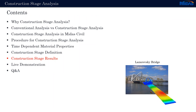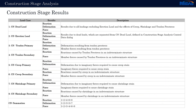Now let's look a bit into construction stage results. Construction stage results are separated in order to be easier to read, and we can read results for dead loads, erection loads, and also results coming from pre-stress, creep, and shrinkage — both in their primary and secondary effects. All of these can be read together under summation in order to have the result from the total effect on the elements.